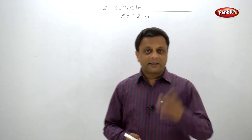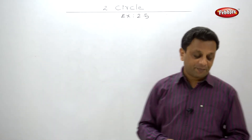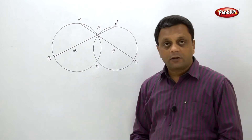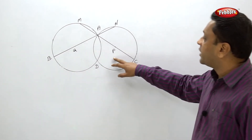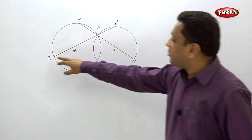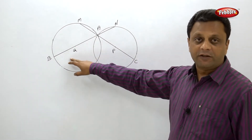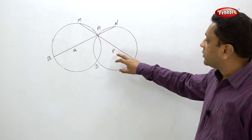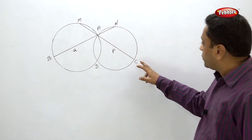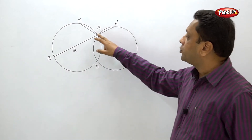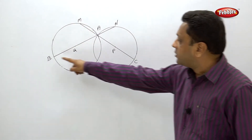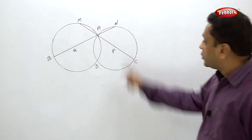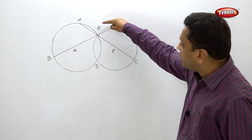Hello friends, welcome back. Let us start exercise 2.5. The figure has two circles: one with center Q and one with center P. AB is the diameter of the circle with center Q, and AC is a diameter of the circle with center P. This diameter produced intersects the other circle in M, and that diameter produced intersects in N. Both circles intersect each other at A and D.